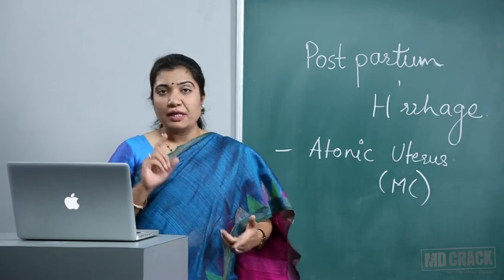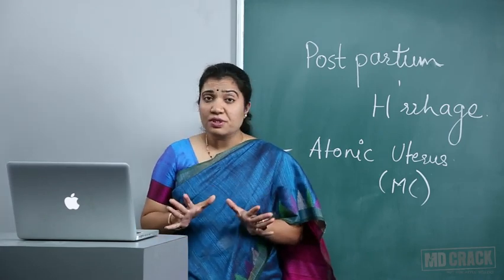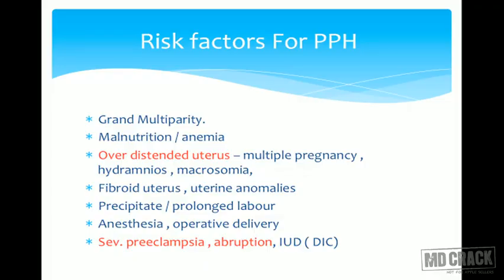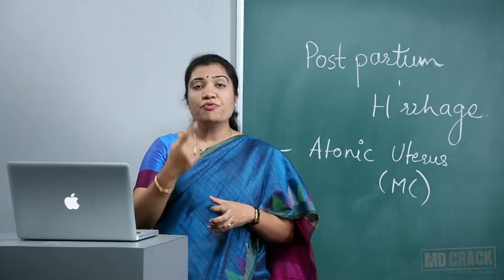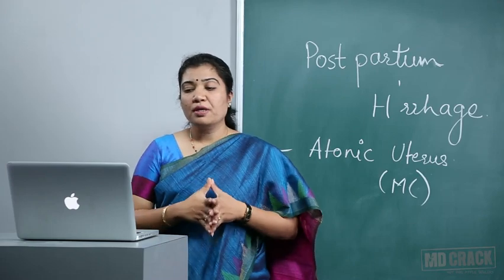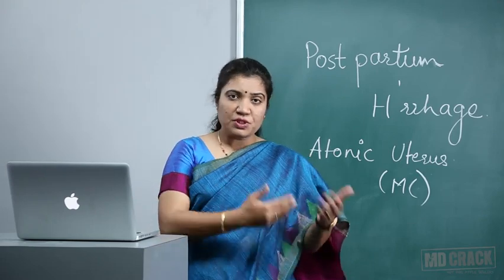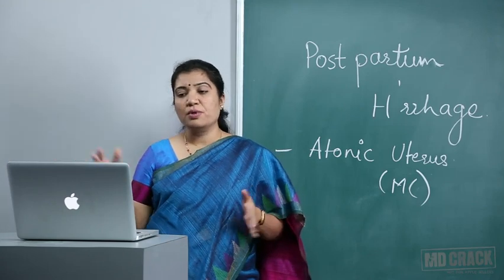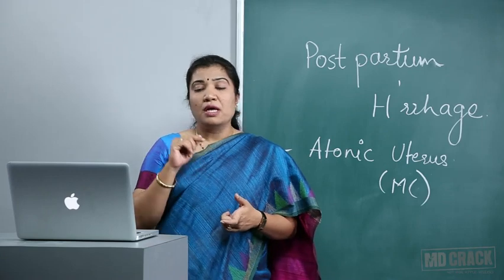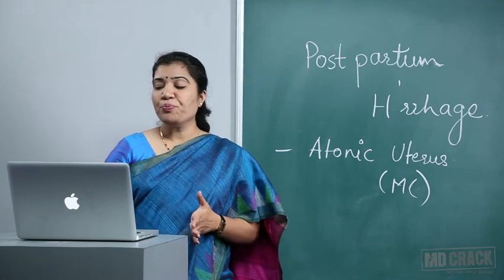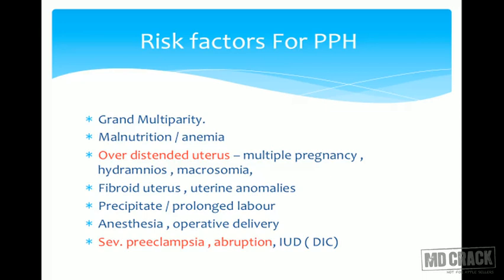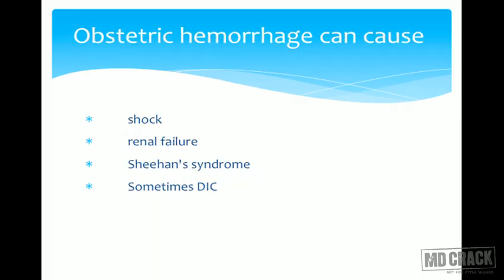Important risk factors to remember include grand multiparity, a flabby uterus, malnutrition, and anaemia. An over-distended uterus due to polyhydramnios, multiple pregnancy, or macrosomia also leads to PPH. Uterine anomalies and fibroid uterus prevent proper retraction. Precipitate labour within two hours or prolonged labour, anaesthesia, operative deliveries, severe pre-eclampsia, and abruption are all significant risk factors.